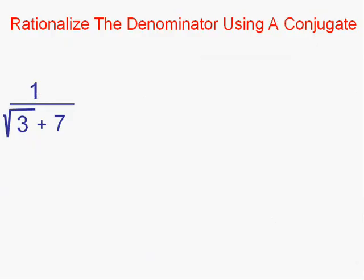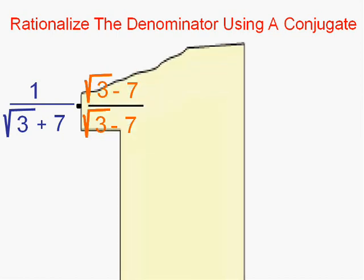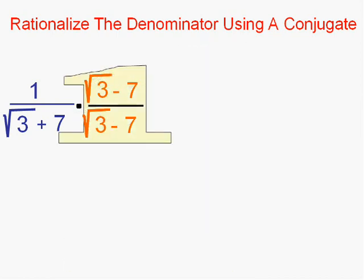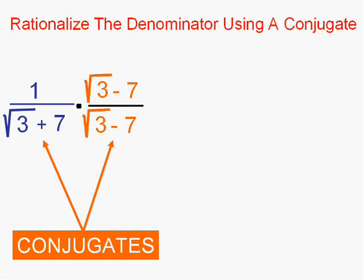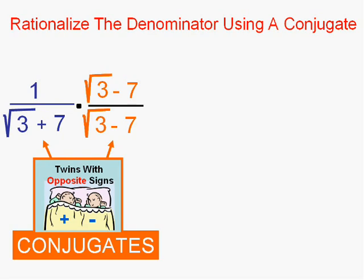Now when we had a radical in the denominator with a plus or a minus sign, we used these animals called conjugates. The conjugate was kind of an odd couple — kind of the twin with different signs. As long as we multiply the top and bottom by the same thing, we're multiplying by one, and that's legal in fractions. The conjugate was that denominator's twin, except with an opposite sign.